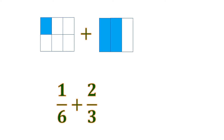What we're going to do is cut 2 thirds in half to make it all 6. So now from 2 thirds, it becomes 4 sixths, or 4 shaded parts out of 6. And now it fits with 1 sixth, so we can combine them.